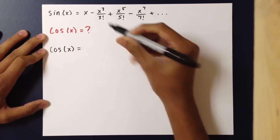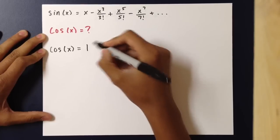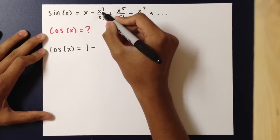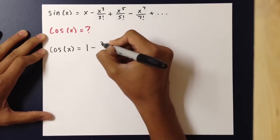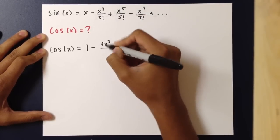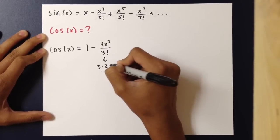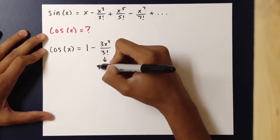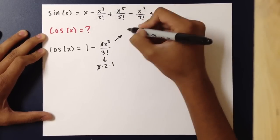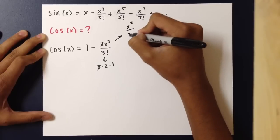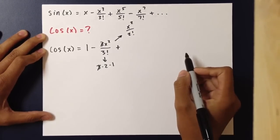The derivative of the first term of sine of x is 1. The derivative of x cubed over 3 factorial is 3x squared over 3 factorial. We know that 3 factorial is 3 times 2 times 1, so we can cancel the 3's, and this term becomes x squared over 2 factorial. And this applies to the rest of the terms as well.